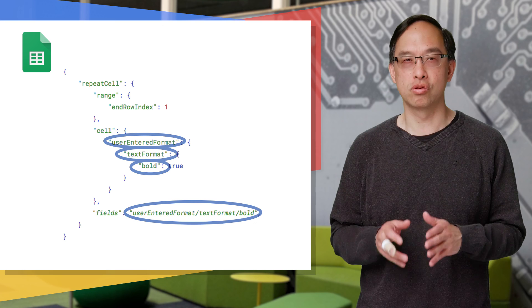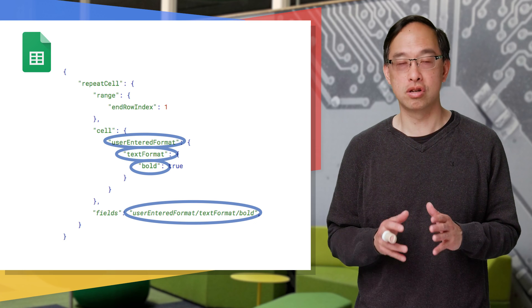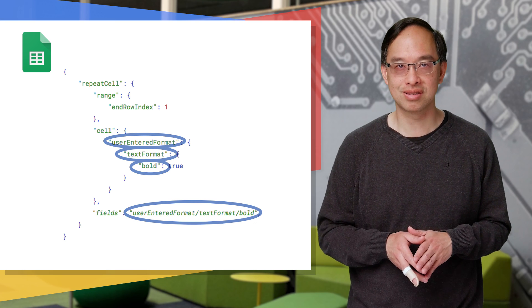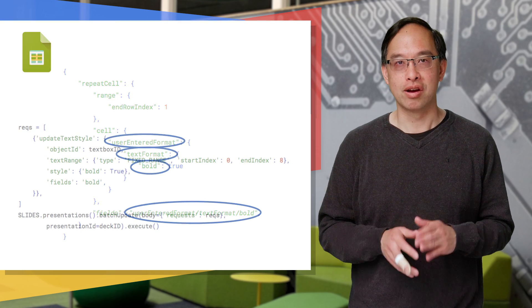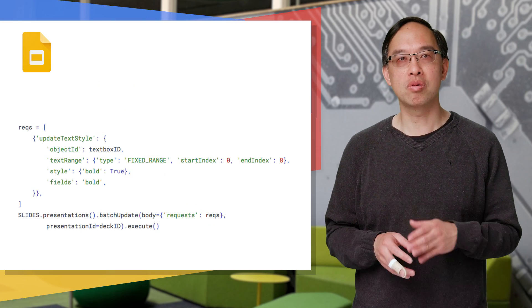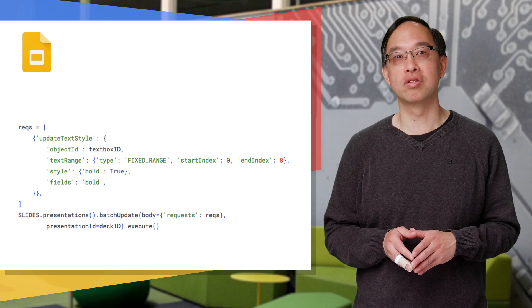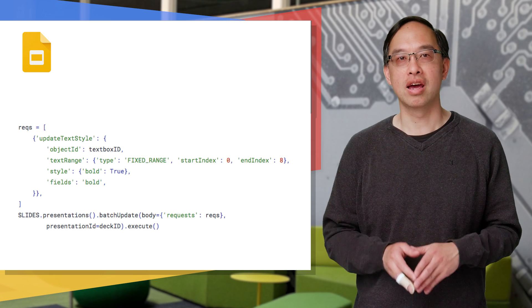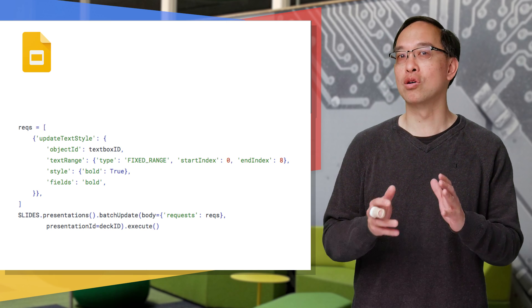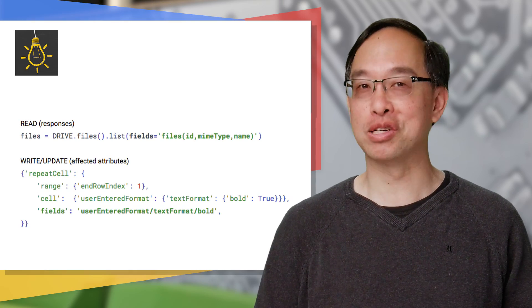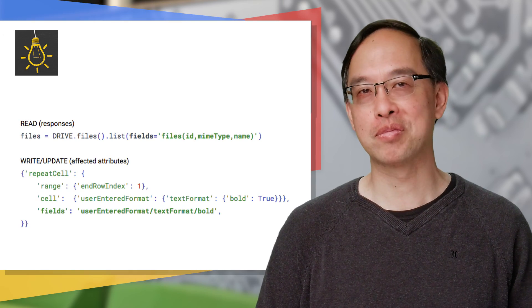Each API differs, so check the docs to determine your root objects. Here's some Python that implements bolding of the first eight characters of the text box, and that's almost the entire story on field masks. I'd like to share a few parting tips as we wrap up.